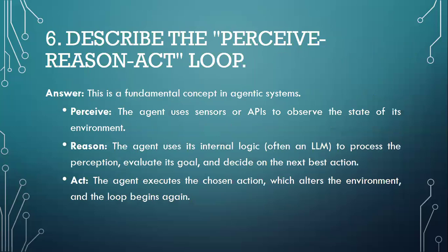Moving to question number six: Describe the Perceive-Reason-Act loop. This is a fundamental concept in the agentic system. Perceive — the agent uses sensors or APIs to observe the state of its environment. Reason — the agent uses its internal logic, often an LLM, to process the perception, evaluate its goal, and decide on the next best action. Act — the agent executes the chosen action, which alters the environment, and the loop begins again.